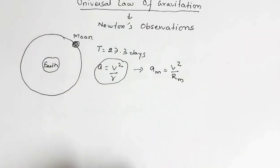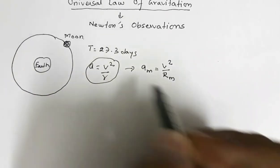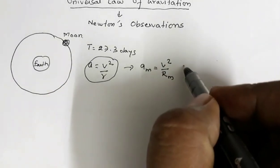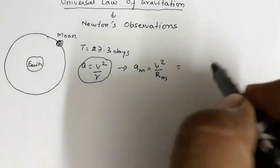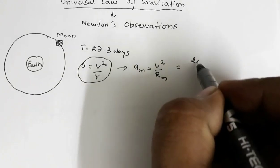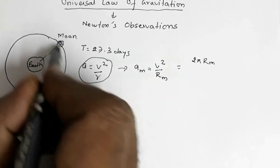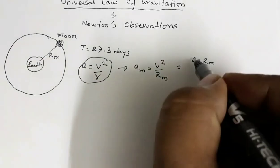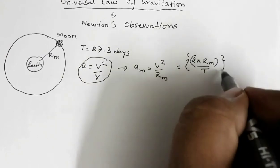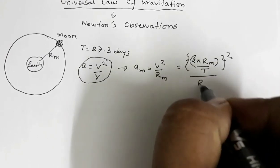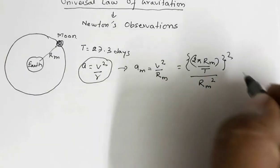How did he find the value of v and rm? The speed of revolution v is the circumference of the path, 2π·rm, divided by the time period T. So v² divided by rm gives us the centripetal acceleration, which works out to 4π²·rm divided by T².